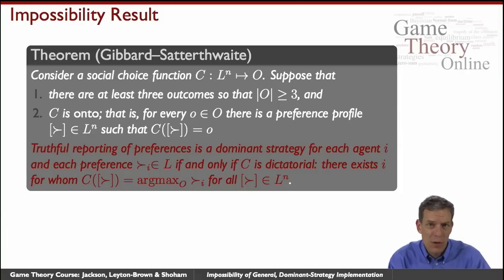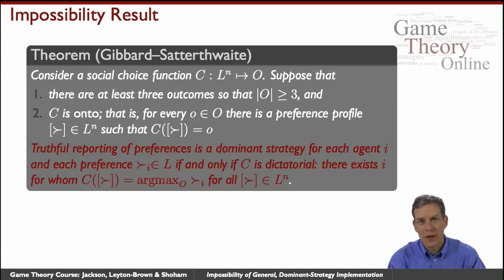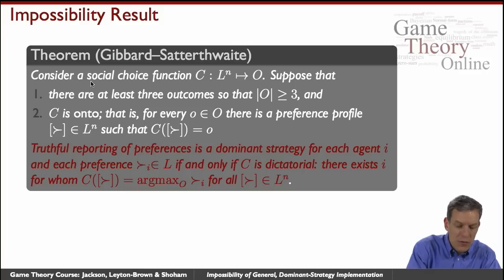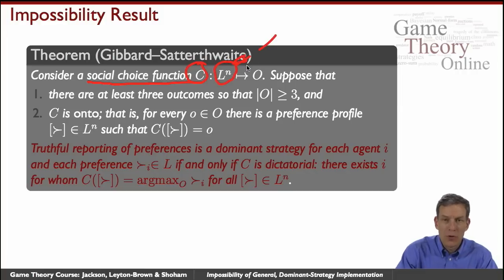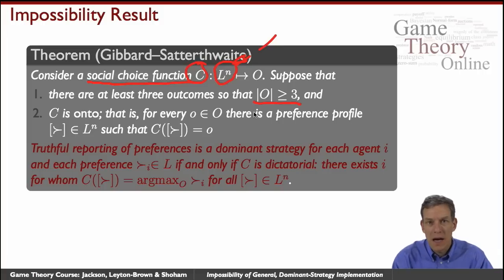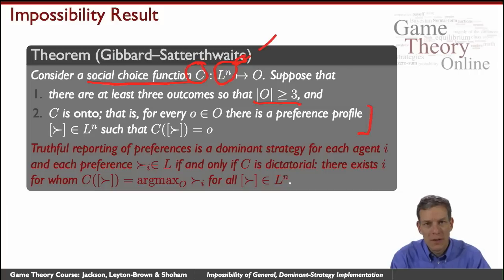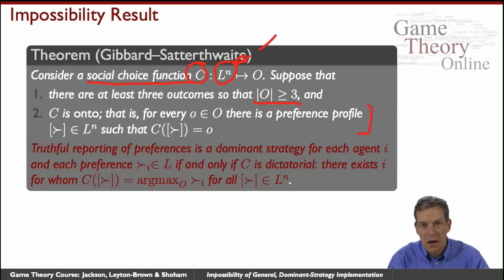This is the Gibbard-Satterthwaite theorem, which is another form of an impossibility theorem, similar to Arrow's theorem and the Muller-Satterthwaite theorem — situations where we have a set of desirable conditions and it's impossible to have them all at once. The setting is: we have a social choice function mapping all possible preferences, where people have linear orders and any strict ranking over candidates. We look at situations with at least three outcomes to choose from.